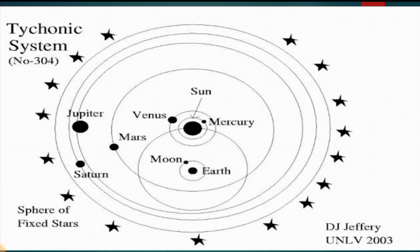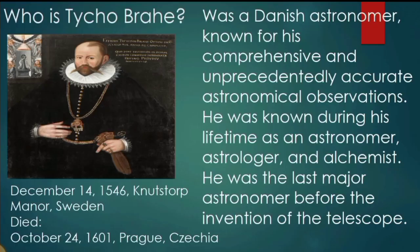In the tyconic model, the Moon and Sun orbit the Earth, along with other stars, while the remaining five planets orbit the Sun — only five planets were known at that time. Who is Tycho Brahe? He was a Danish astronomer known for his comprehensive and unprecedentedly accurate astronomical observations. He was known during his lifetime as an astronomer, astrologer, and alchemist, and was the last major astronomer before the invention of the telescope. He was born December 14, 1546, and died October 24, 1601, in Prague.